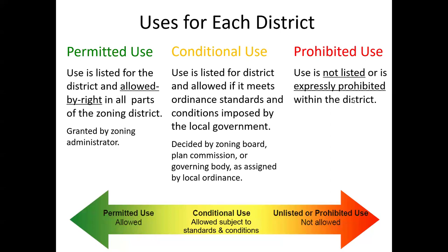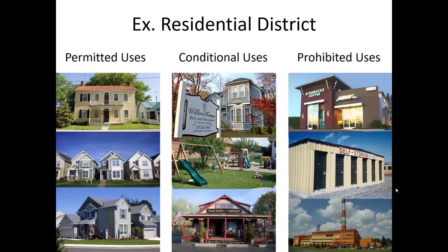A permitted use is a use listed for a given zoning district and it's allowed by right — it's not a discretionary decision. If it's listed, you get the green light as long as you meet any other dimensional or development standards. This is granted by a zoning administrator, a staff-level decision — you get a zoning permit, maybe a land use permit. Anything that's not listed or expressly prohibited in your ordinance is not allowed. Then there's this interesting middle category called conditional uses — some people use the term special exception use.